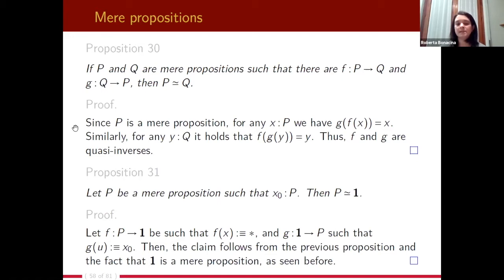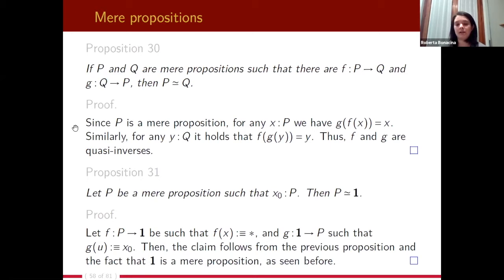It also holds that if P is a mere proposition which has a term x₀, then it is equivalent to the type 1. We take a map from P to 1 mapping all elements to the unique element of 1, and a map g from 1 to P mapping the term u to x₀. From the previous proposition and the fact that 1 is a mere proposition, we obtain the claim.